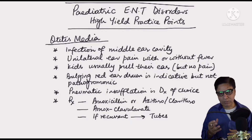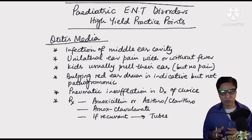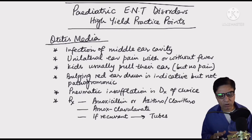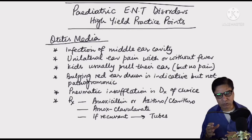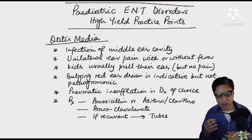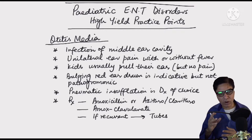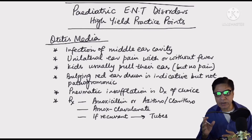When you do otoscopy and see a bulging red membrane with loss of light reflex, it is indicative of fluid behind the ear but not pathognomonic of otitis media. A red bulging membrane with loss of light reflex is indicative but not diagnostic — the only diagnostic finding is pneumatic insufflation, which we rarely perform.